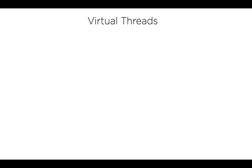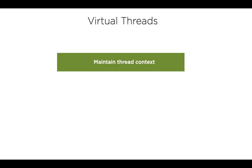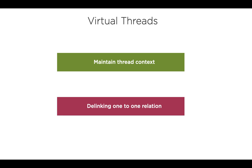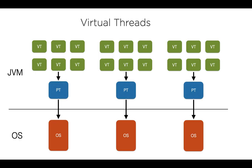Virtual threads give us the best of both. They allow us to maintain the thread context of processing a request, while at the same time delinking the one-to-one relation between a platform thread and an OS thread. There is no longer a one-to-one mapping between a virtual thread and an OS thread — rather, a large number of virtual threads are mapped to an OS thread. Just as operating systems give the illusion of plentiful memory by mapping a large virtual address space to a limited amount of physical RAM, a Java runtime can give the illusion of plentiful threads by mapping a large number of virtual threads to a smaller number of OS threads.